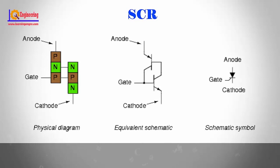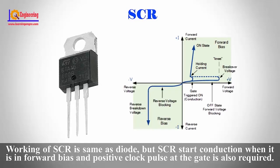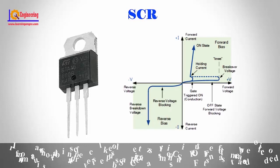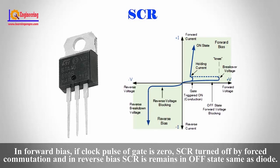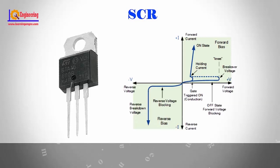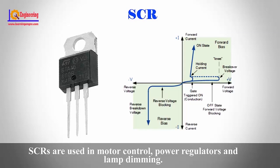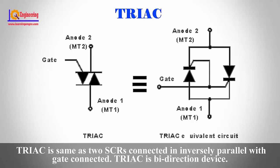SCR — Silicon Controlled Rectifier — has three terminals: gate, anode, and cathode. The working of SCR is similar to a diode, but SCR starts conduction only when it is in forward bias and a positive gate pulse is also applied. If the gate pulse is zero in forward bias, the SCR turns off by forced commutation. In reverse bias, SCR remains in the off state, same as a diode. SCRs are used in motor control, power regulators, and lamp dimming.